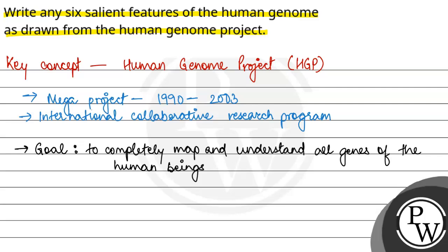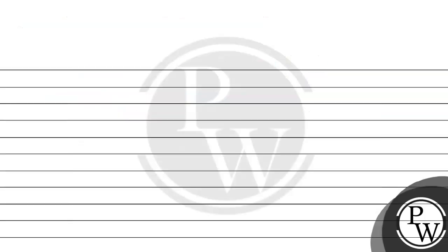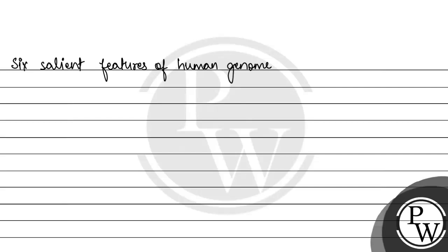Now let us discuss about the six salient features of the human genome drawn from the Human Genome Project, that is HGP.